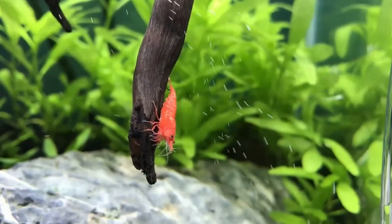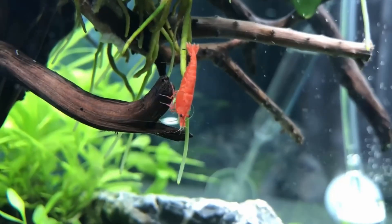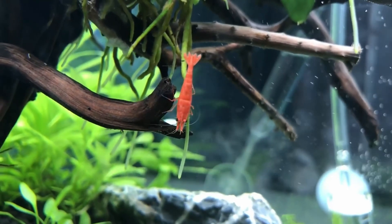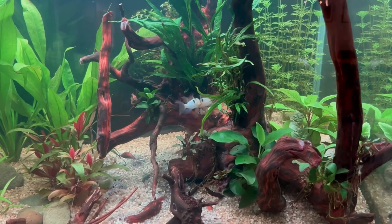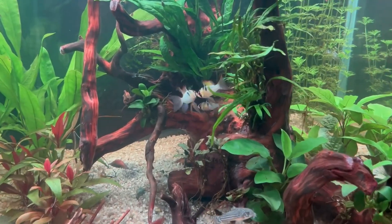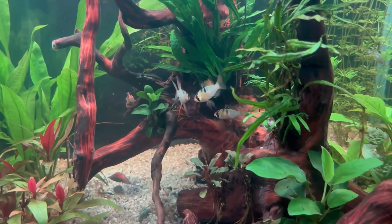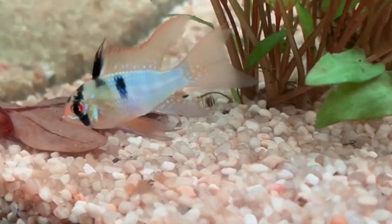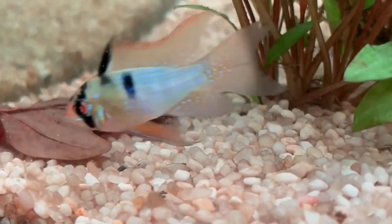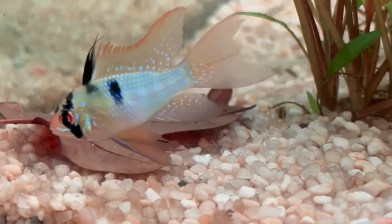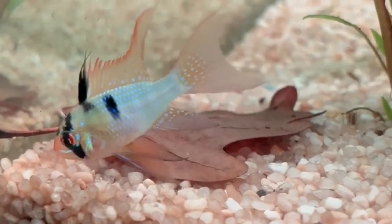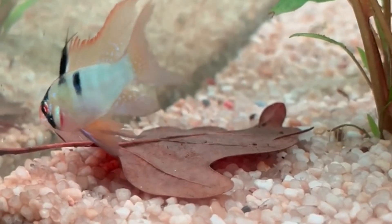So if you have problems with snails and shrimp, you may want to look into your GH. And high GH can influence hormone levels of your fish, making them much more aggressive. And like with pH, sudden changes of KH and GH can make fish much less resistant to disease.